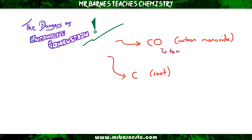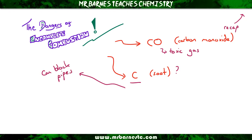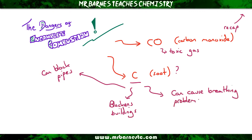There's a recap video on carbon monoxide if you can't remember — I'll put a link in the top right hand corner. Today we're going to focus on what that carbon does. The key thing is it can block pipes, which can increase the amount of incomplete combustion, carbon monoxide, and soot being produced. It can also blacken buildings, and perhaps most importantly, it can cause breathing problems.